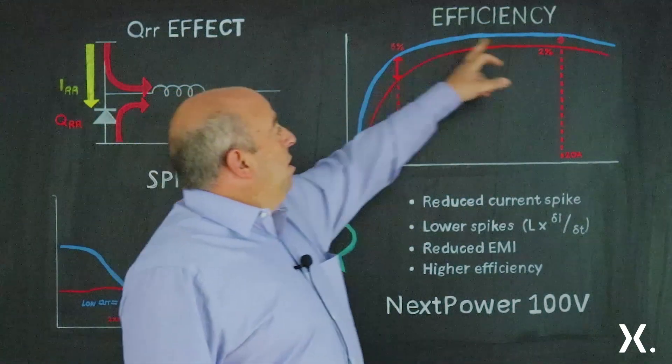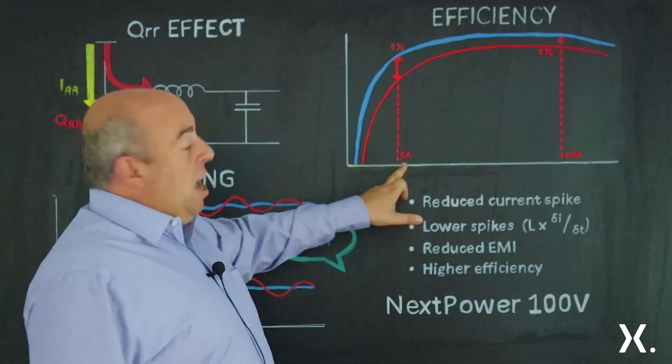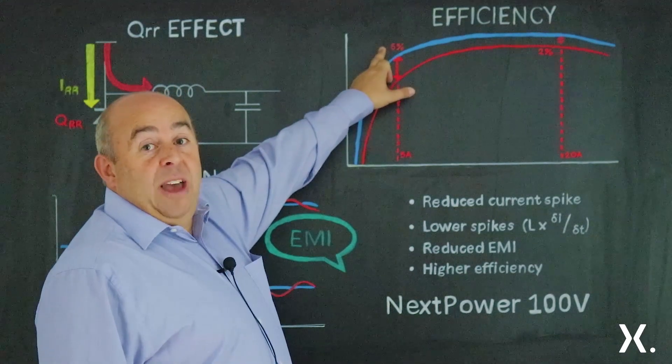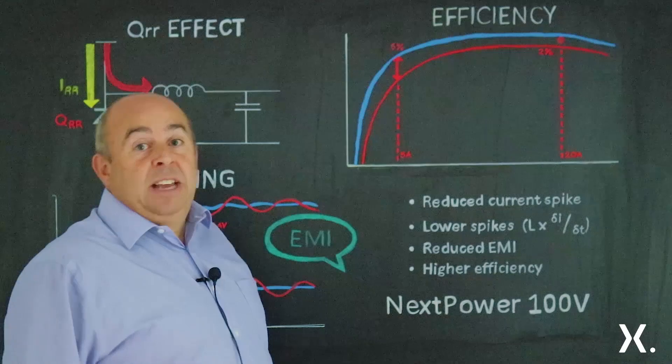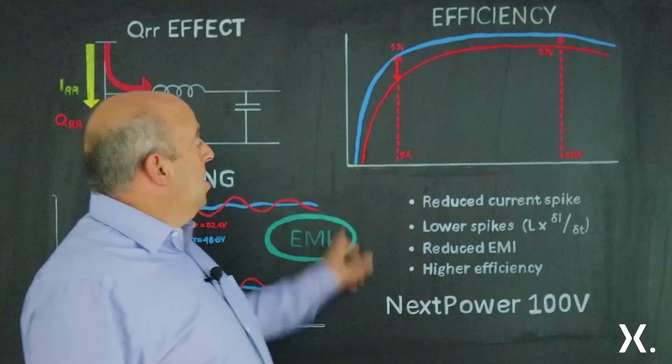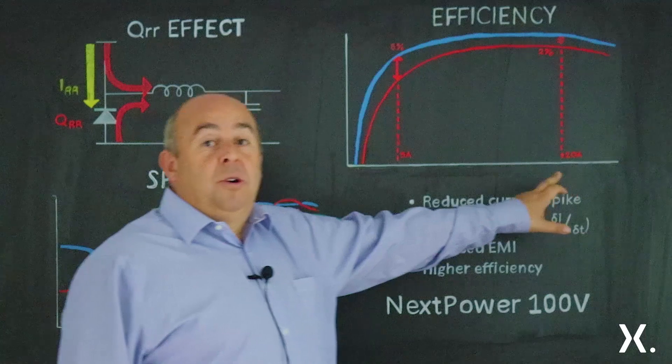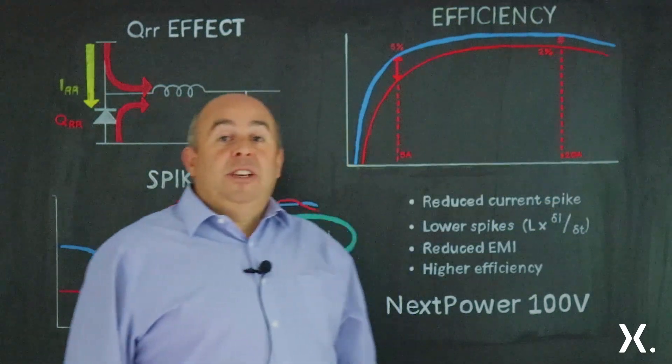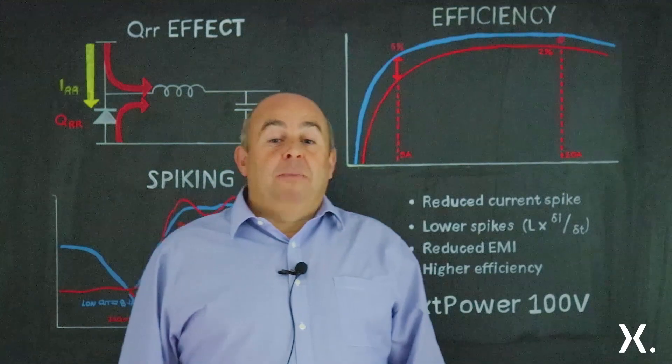You can see a typical efficiency curve here. At 5 amps, a low QRR MOSFET can give up to 5% improvement in efficiency, and at 20 amps a low QRR MOSFET can give around 2% improvement in efficiency in your application.